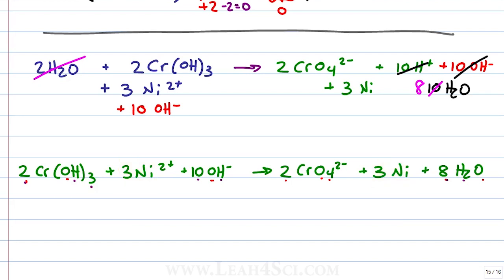On the reactants, we have 0 plus 3 times 2 is 6 plus 10 times -1 minus 10. For a total of +6 - 10 which is equal to -4. And the products we have -2 times 2 which is -4.